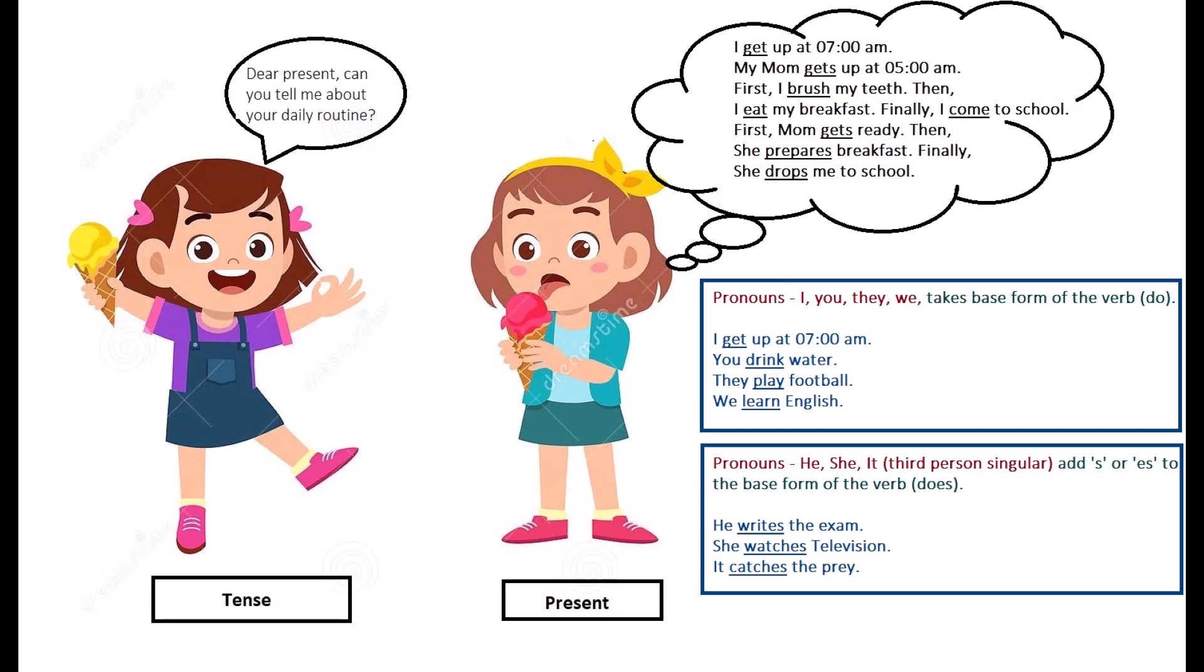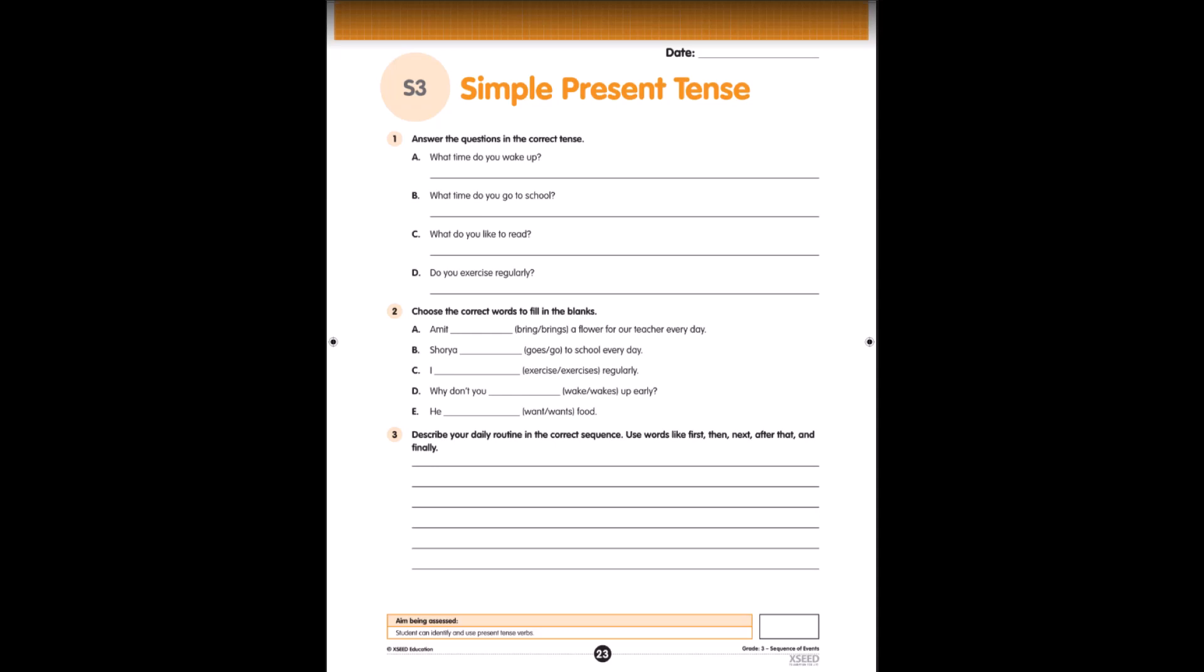Now, you may please turn to page number 23 of your English workbook. There, you can see S3 Simple present tense. Question number one, answer the questions in the correct tense. What time do you wake up? You can write your own time. For example, I wake up at 6 in the morning. What time do you go to school? I go to school at 7 am. So write your own answers.